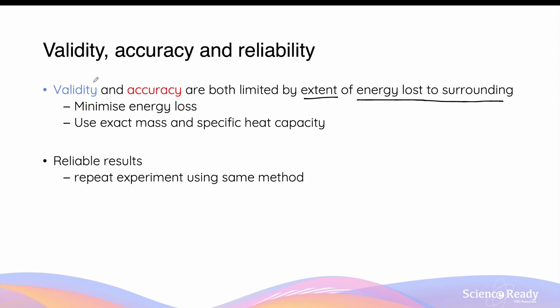To improve the validity and accuracy of your results, you should minimize energy loss — which is why we use an insulated vessel in calorimetry. You can also improve results by using the exact mass of the final solution instead of assuming the density equals that of water, and by using the actual specific heat capacity of the solution rather than the value for pure water. The reliability of results can be assessed by repeating the experiment using the same method; results are reliable if repeated values are consistent or similar.